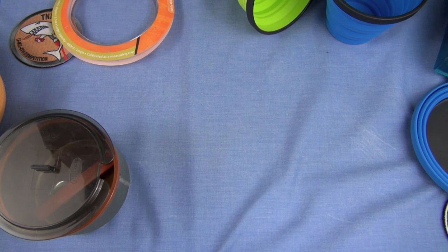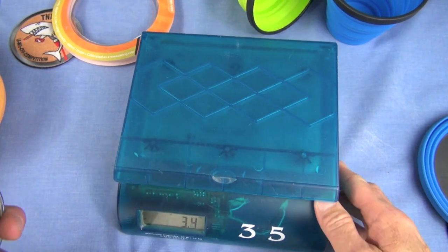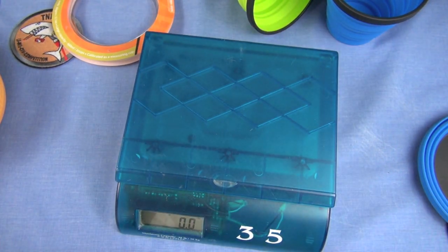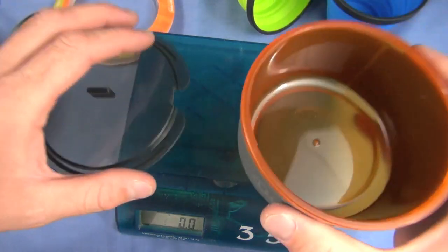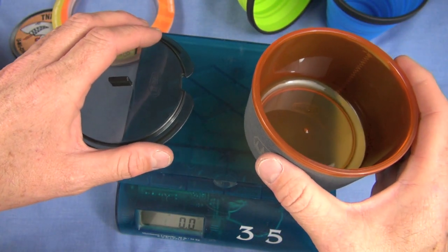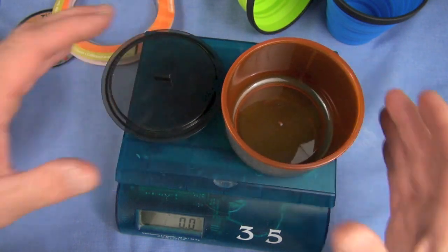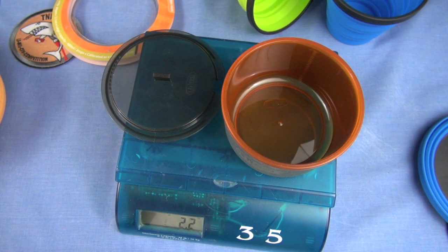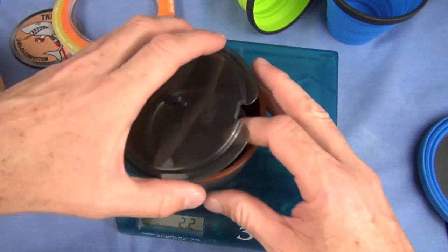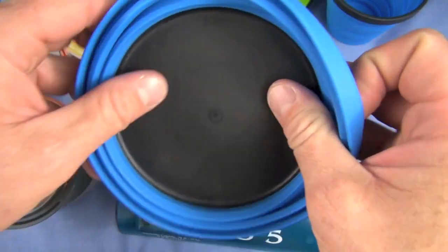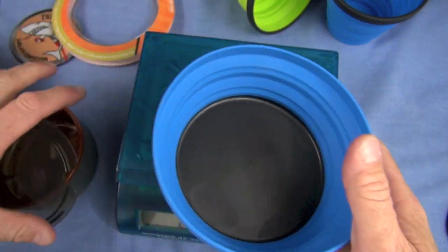Take this out. It does have a neoprene sleeve on the exterior. It's actually pretty light. I'll say 2.5. 2.2, okay. So it's about the same weight as this, but this, volume-wise, will dominate it.